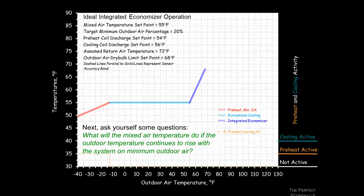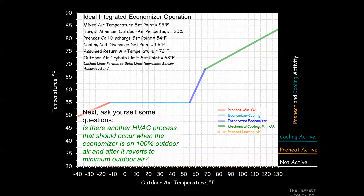Above the lockout temperature, using the same equation and recognizing the same slope as the cold-side minimum ventilation condition, we round out our economizer ideal profile. We can also mark the point where the cooling coil gets enabled at 55 degrees — when we're no longer able to use outside air alone to meet the set point.